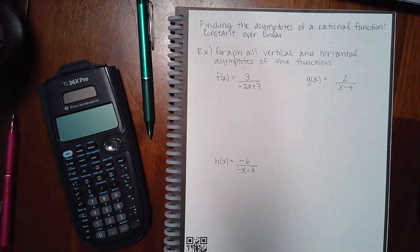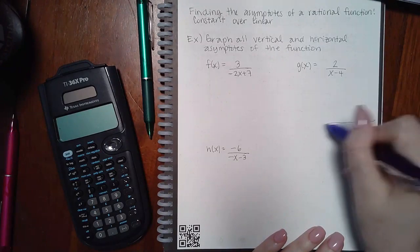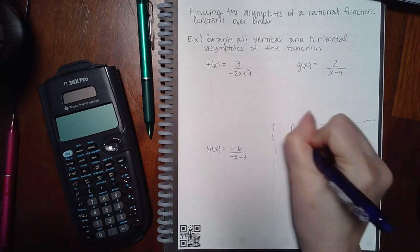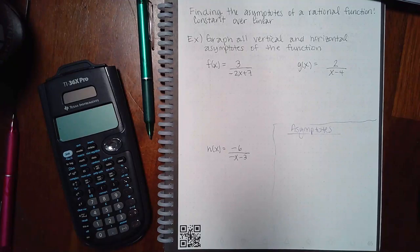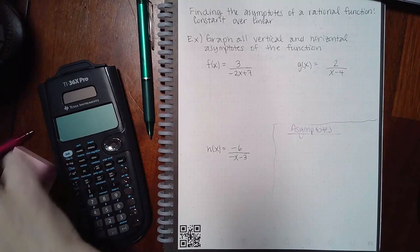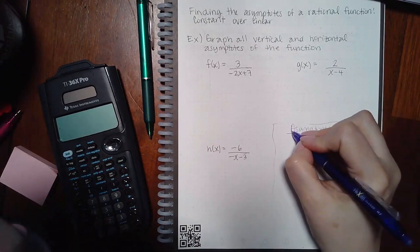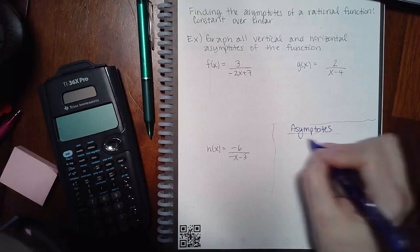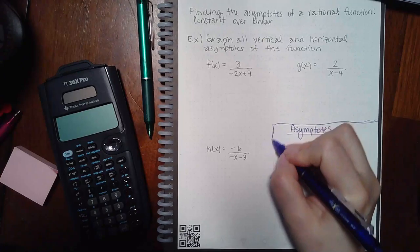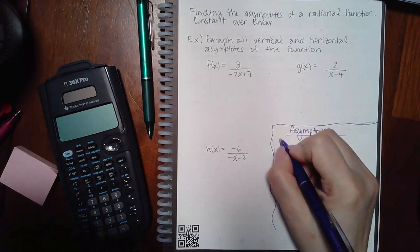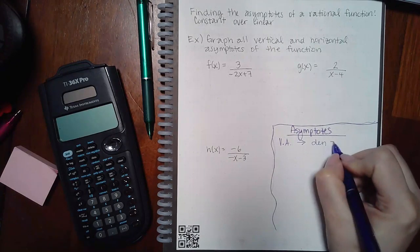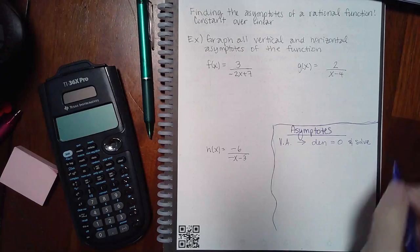Now it talks about finding the asymptotes of a rational function — we want to find both vertical and horizontal asymptotes. For vertical asymptotes, you basically set your denominator equal to zero and solve, and you'll figure out the equations for the vertical asymptotes.